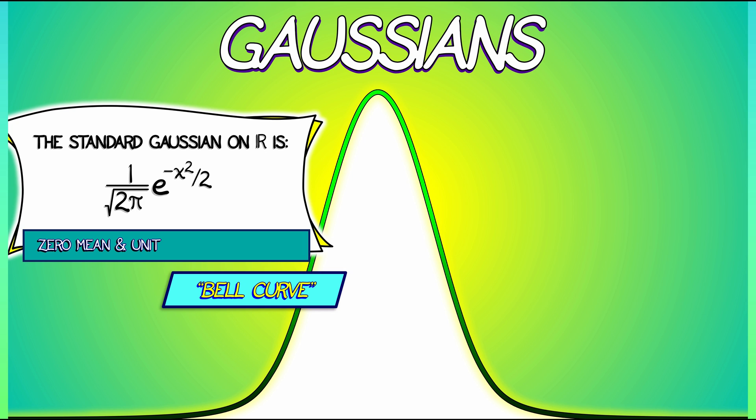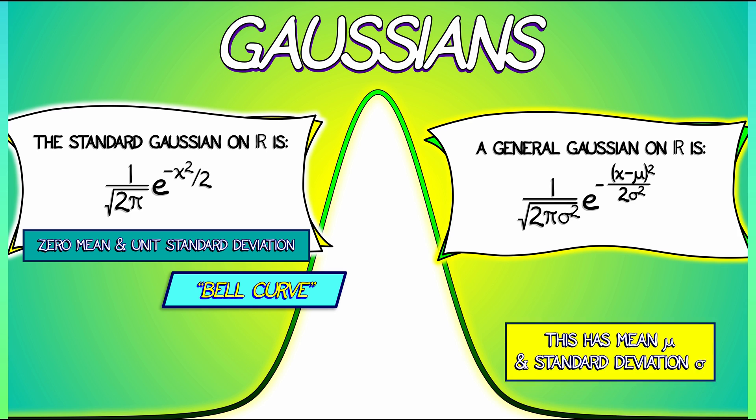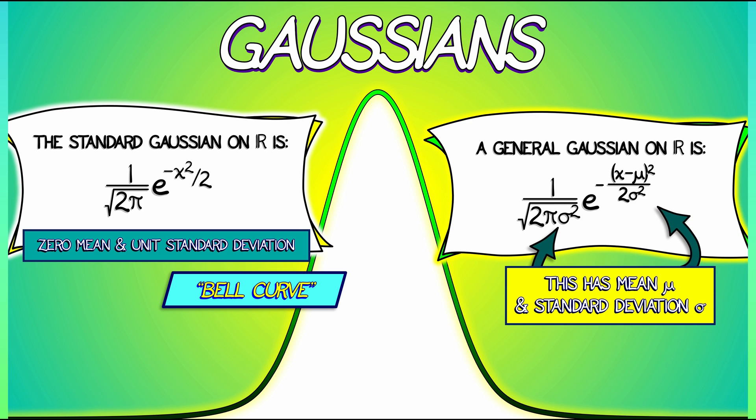This is a Gaussian with zero mean and unit standard deviation. Very, very useful. Now, of course, when I say zero mean and unit standard deviation, these are things that we can change. A more general Gaussian is given by 1 over root 2π sigma squared e to the minus quantity x minus μ squared, all divided by 2 sigma squared. Here, μ is the mean of this Gaussian, and sigma is its standard deviation.